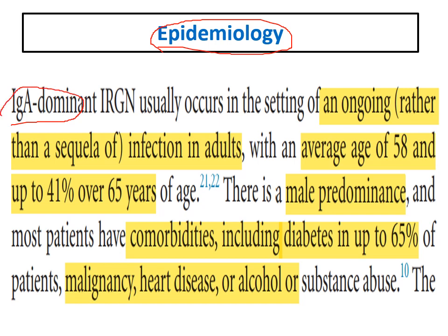IgA dominant infection-related GN usually occurs in adults in the setting of an ongoing infection, rather than as a sequela. Post-streptococcal GN occurs after 7 to 10 days or 2 to 3 weeks following skin or throat infections. By contrast, IgA dominant GN occurs during active infection. The average age is around 55 to 58 years, with up to 41% of patients over 65, compared to 5 to 14 years for post-streptococcal GN.